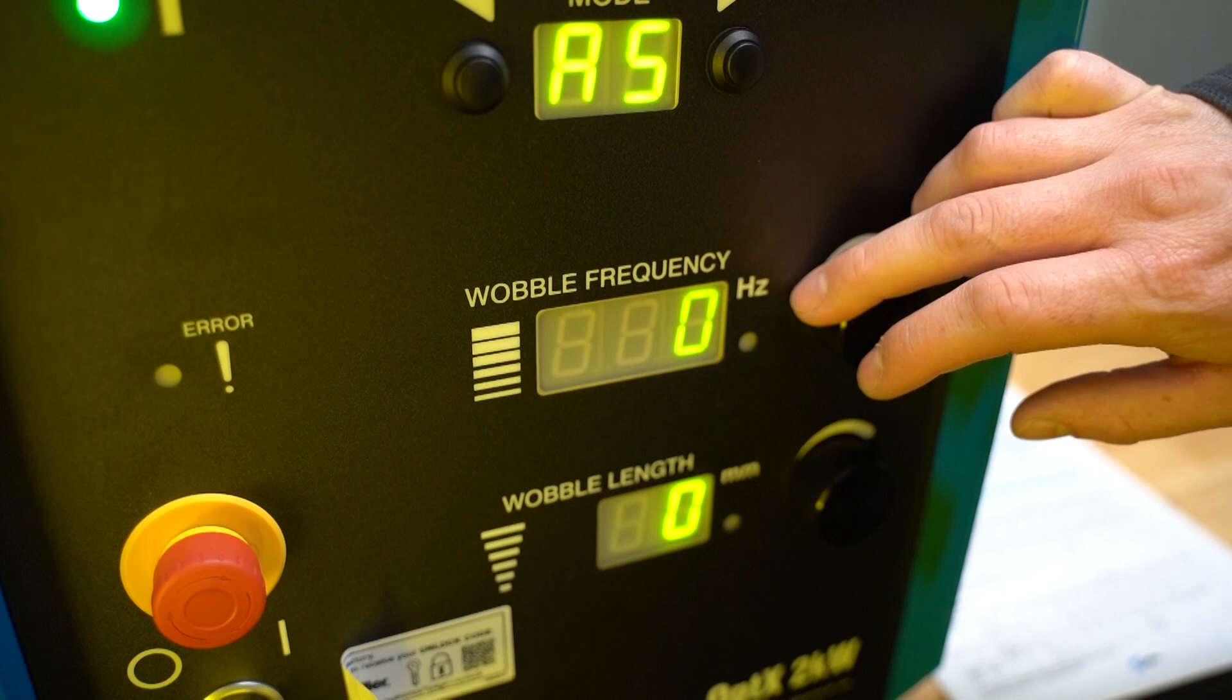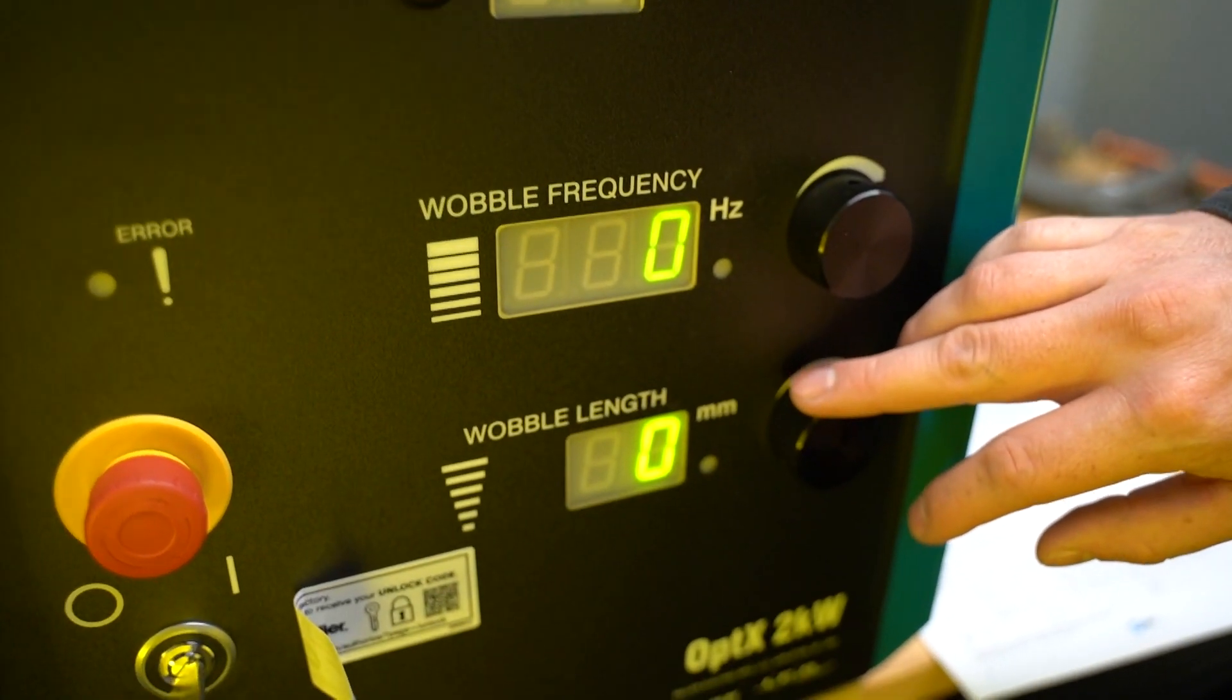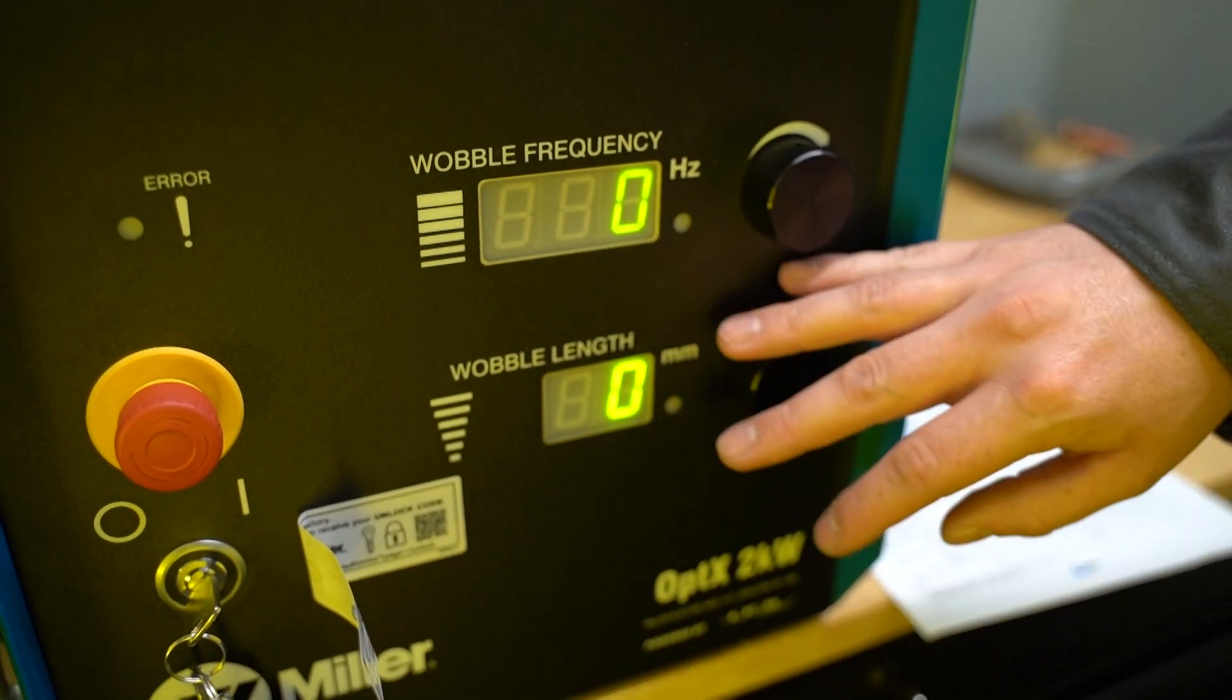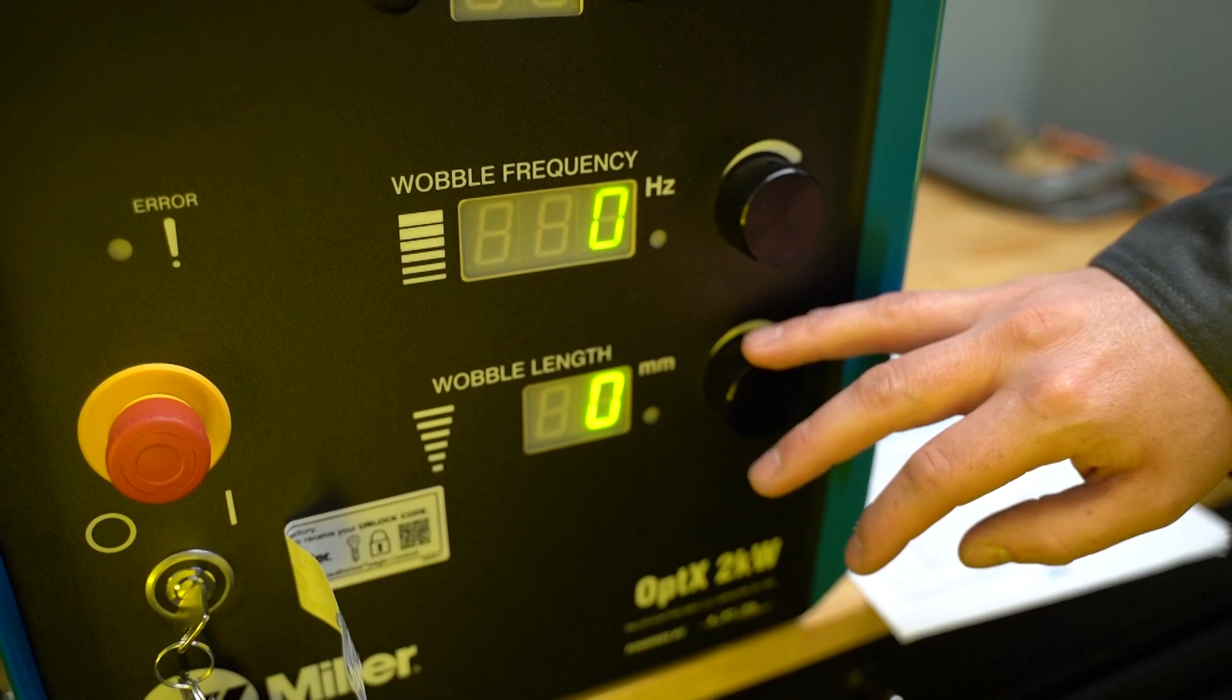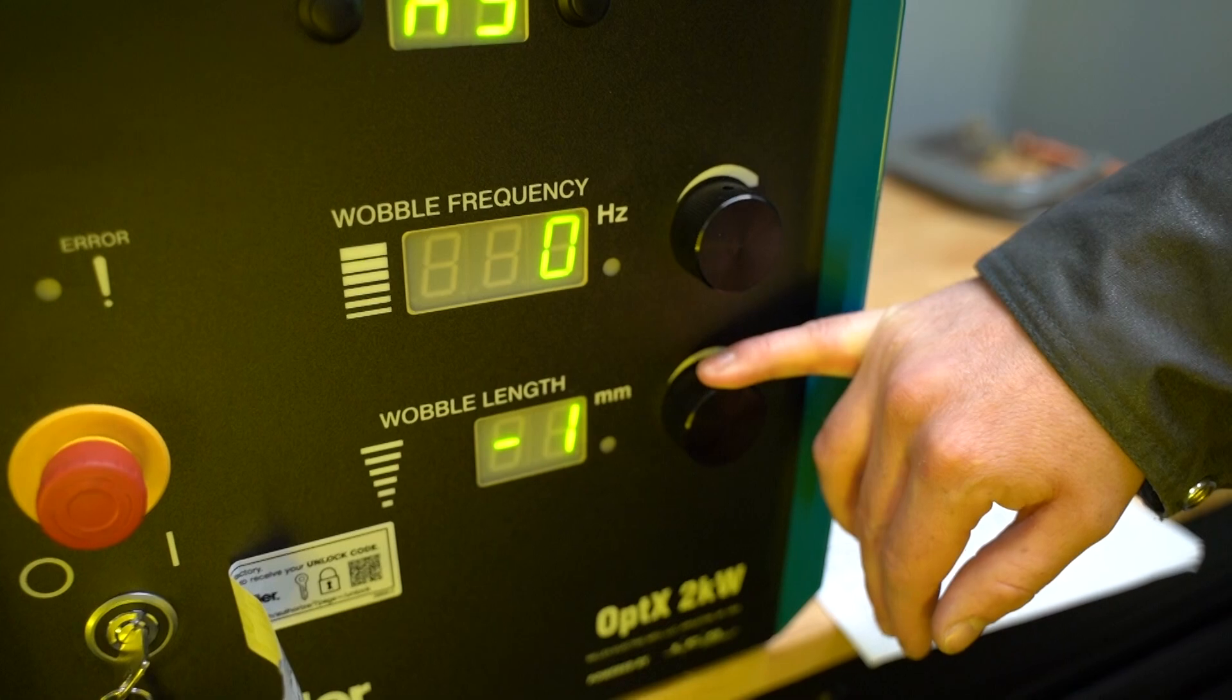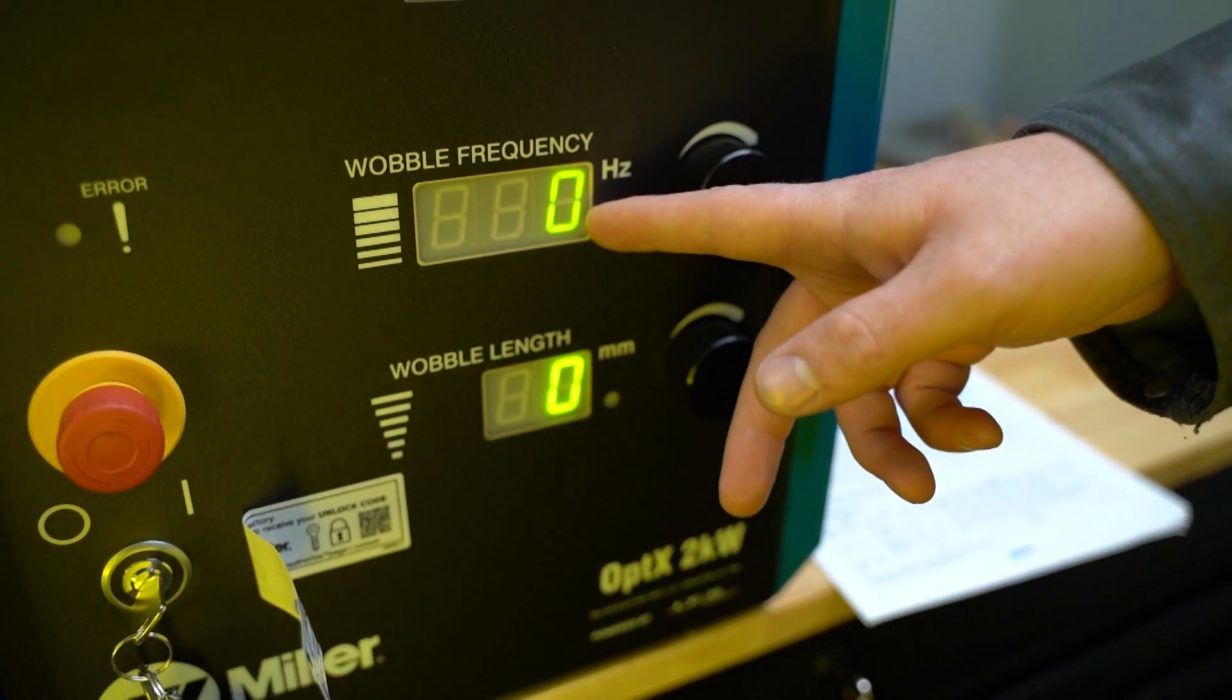Now, zero doesn't mean zero—zero means nominal. Your wobble length is going to basically be your weld width. Again, zero doesn't mean zero, it means nominal. You can't have a negative length, but this is just how far off of nominal are we going. This is how you're going to set the width of your weld.